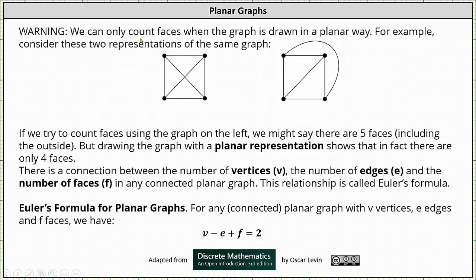One word of caution, we can only count faces when the graph is drawn in a planar way. For example, consider the two representations of the same graph below. If we count faces using the graph on the left, we might say there are five faces, including the outside. Again, four inner faces and one outside face, giving a total of five faces.